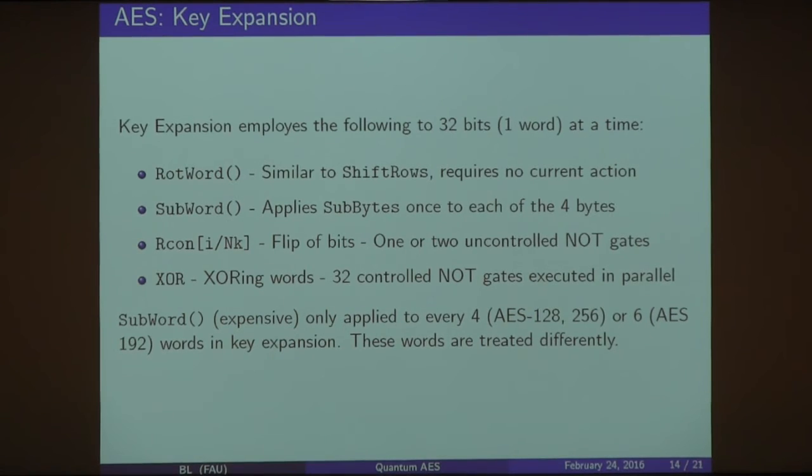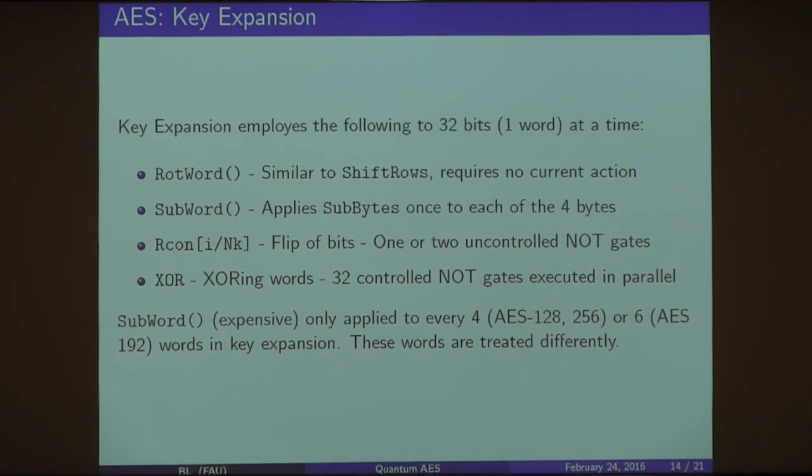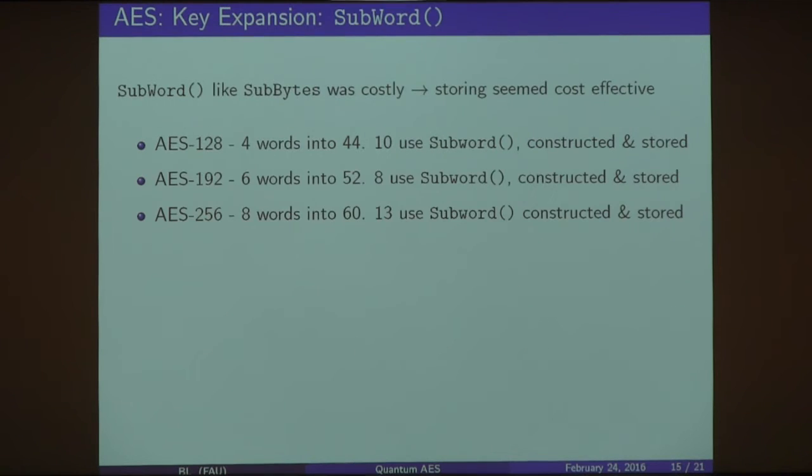Being so costly, we stored those values and the other values when we needed them. The other 75% or five-sixths of the words we just computed, used, and then removed to save qubits and didn't actually store all that and use all that space as we went. RotateWords is the same idea - wasn't costly. The RCon is just a one to two bit flip on all 32 bits, and then the XORing, combining previous words together to create a new word. What happens is you take, for example, AES 128, you start with four words or 128 bits and expand that into 44 words. Only 10 of those used SubWords. Only 10 of those were actually stored. For AES 192, you went from six words to 52 words. Only eight of those used SubWords. And then AES 256, we stored 13 of the total 60 words, along with the original key as well.